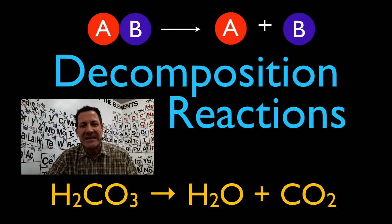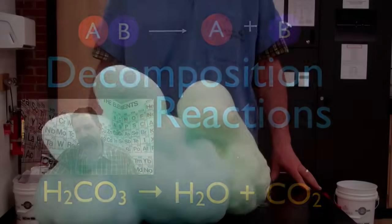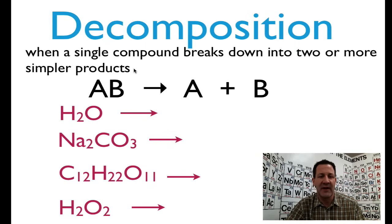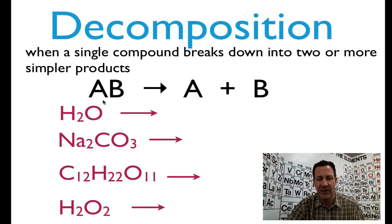In today's video I'm going to be going over decomposition reactions. Decomposition reactions is when a single compound breaks down into two or more simpler products. You can identify decomposition reactions by the fact that you have a single compound on the left-hand side, on the reacting side of your chemical equation, and on the right-hand side you're going to have that compound broken down into simpler components.